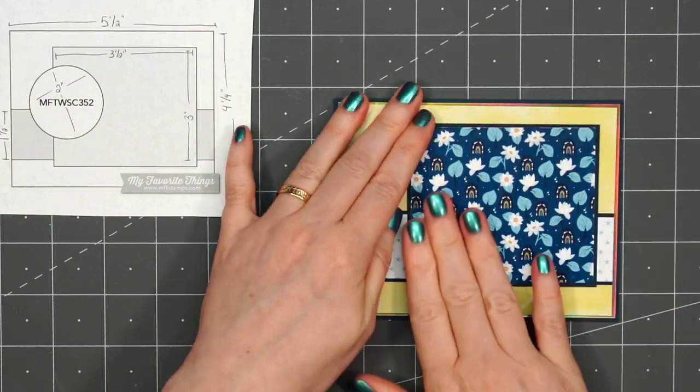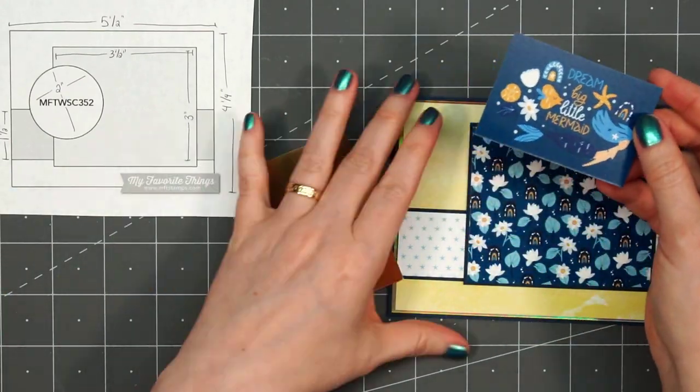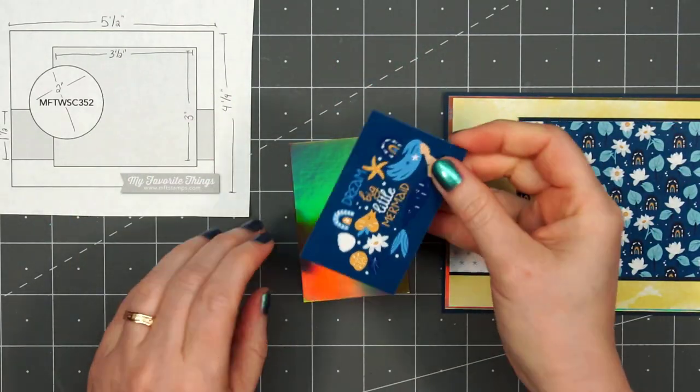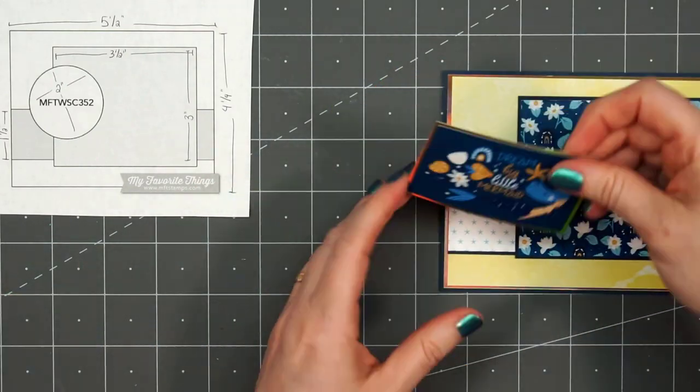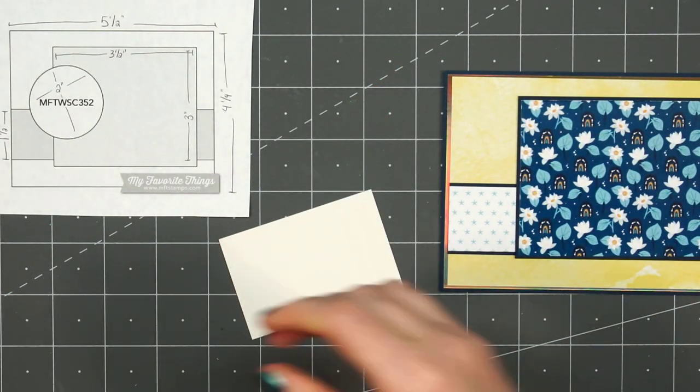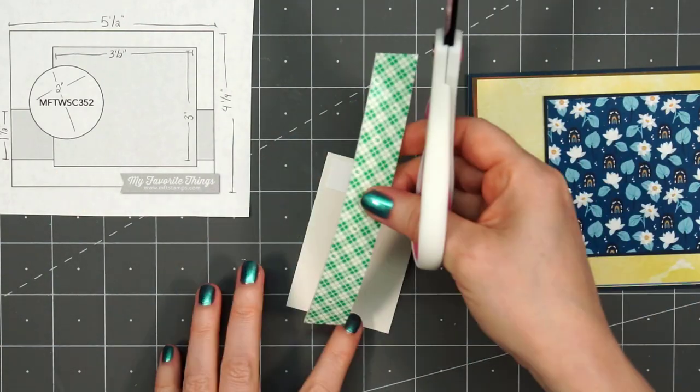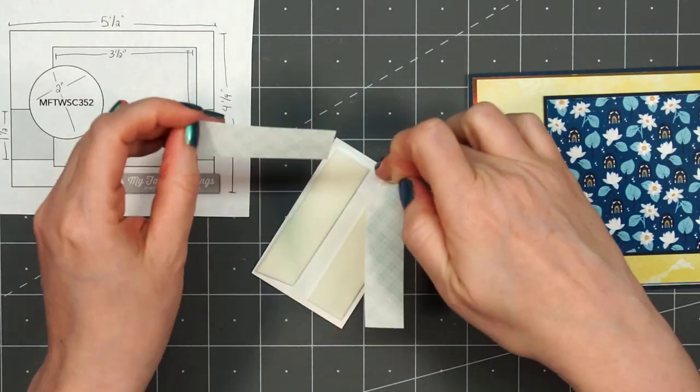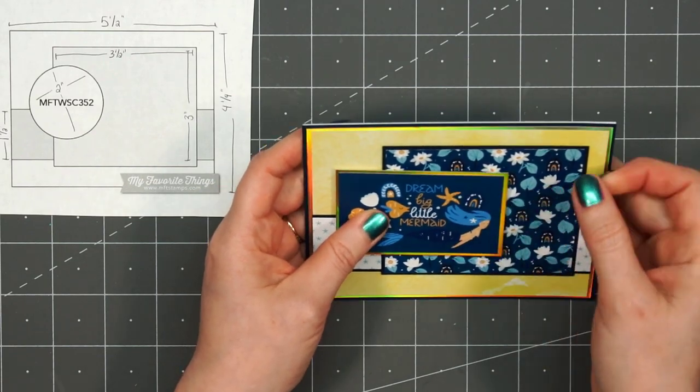This sketch does have a circle indicated for the image or sentiment. I'll be using one of the cut aparts instead. This has a little mermaid, some fish and flowers, and the sentiment is Dream Big Little Mermaid. I thought that was really sweet. I layered it on the same gold holographic cardstock and I will be popping it up using some foam dimensional tape. Just remove the release paper and adhere it to the left hand side of the card.